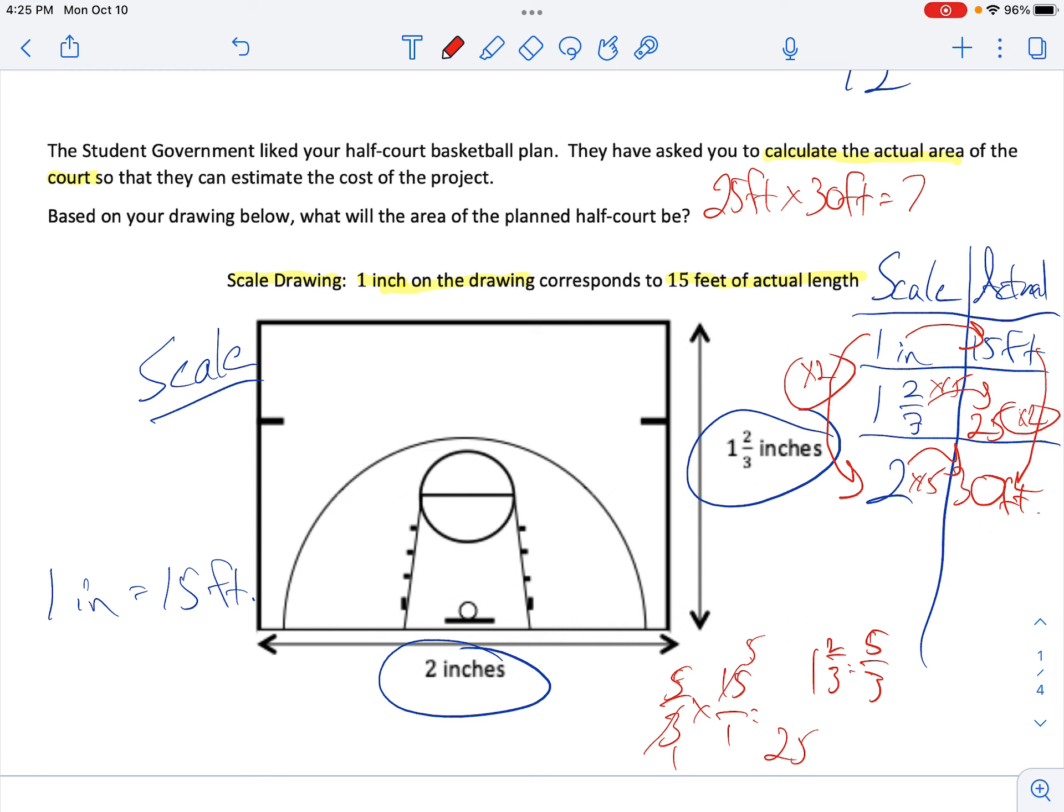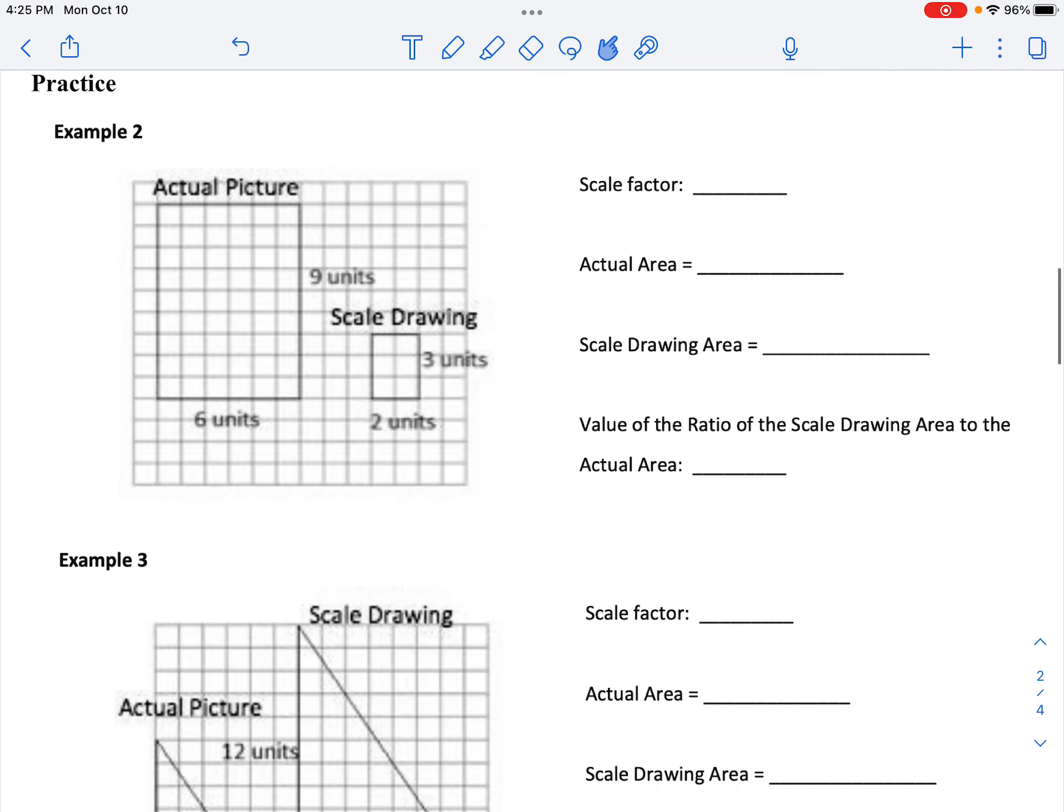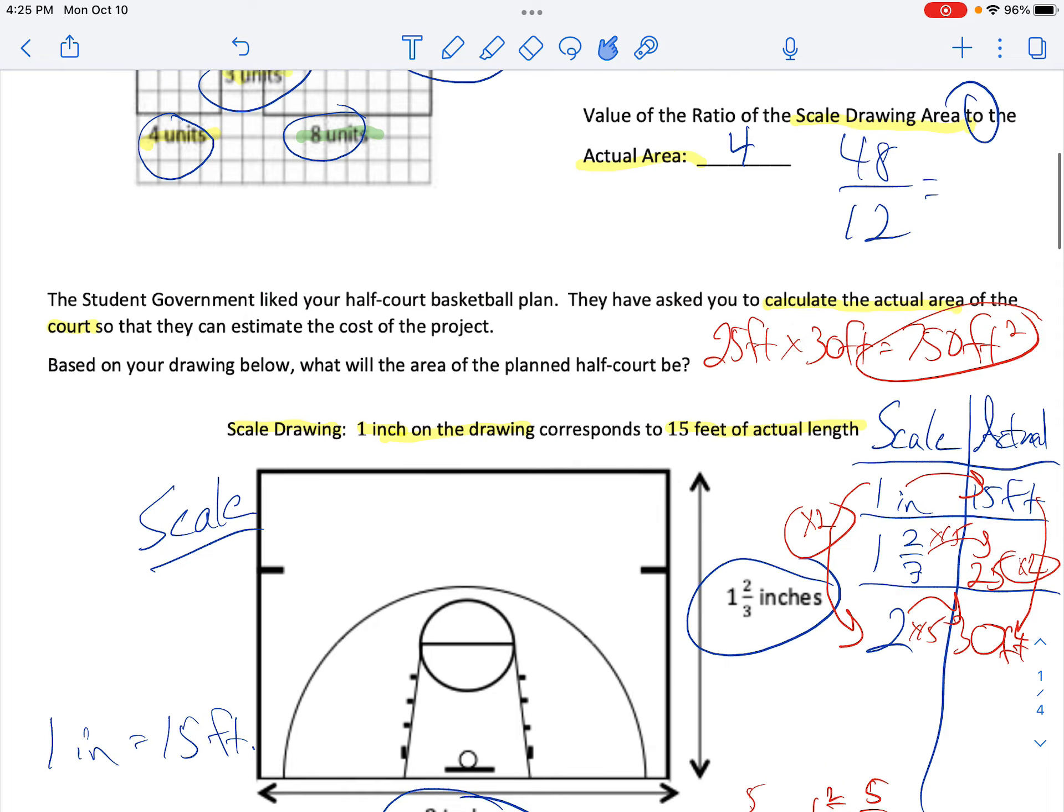Multiply, we get 750 feet squared. And those are the two for the mini-lesson. So, let's go.